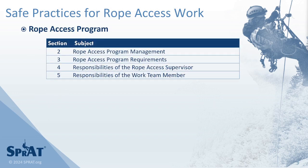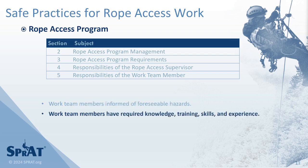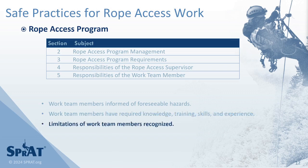Sections 2 through 5 of Safe Practices for Rope Access Work address requirements of a rope access program. These requirements include provision that work team members are informed of foreseeable hazards they may encounter, that the program ensures work team members have the knowledge, training, skills, and experience necessary to safely perform their responsibilities, and that the program recognizes limitations of work team members and ensures no work is undertaken that exceeds those limitations.